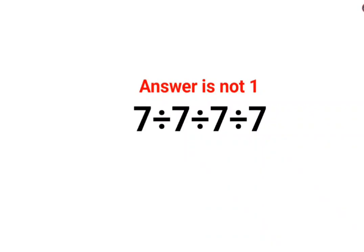Welcome everyone. Today we're going to understand why the answer for this question is not 1. A lot of people think 7 divided by 7 is 1, and here also this is 1, and 1 divided by 1 equals 1.